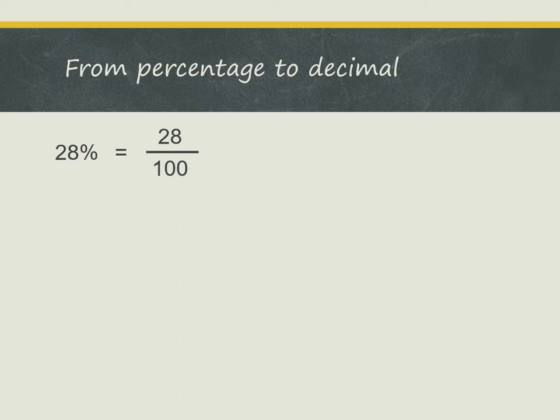And 28 out of 100, we can also say it as 28 hundredths. And 28 hundredths, when you write it as a decimal, it's 0.28.